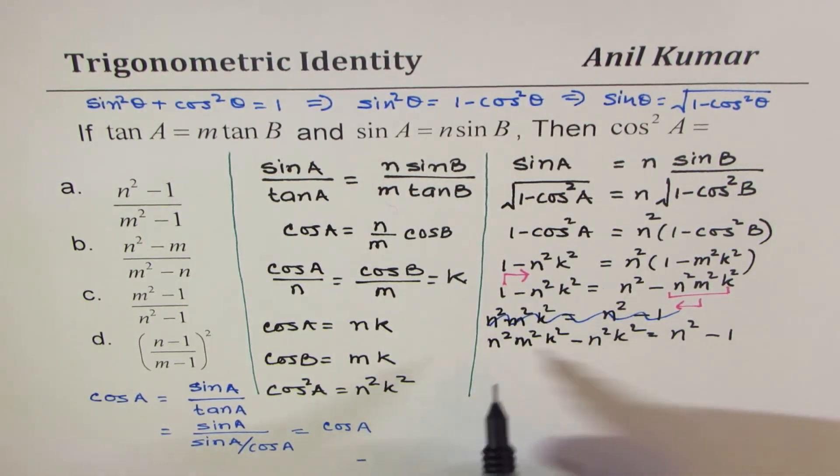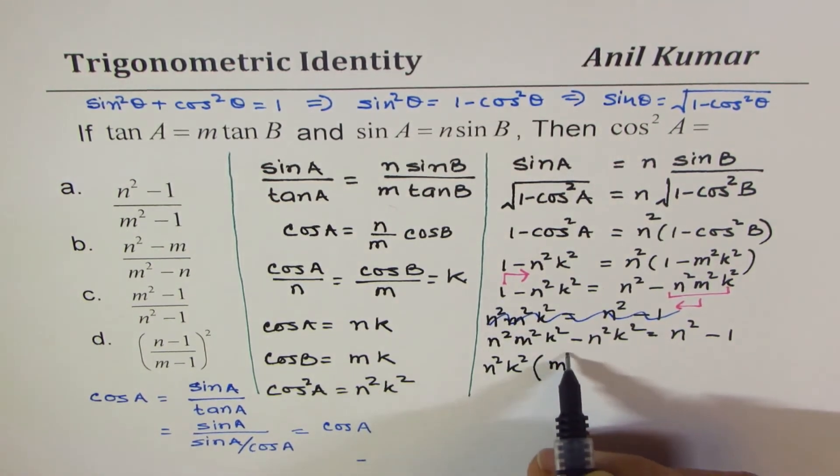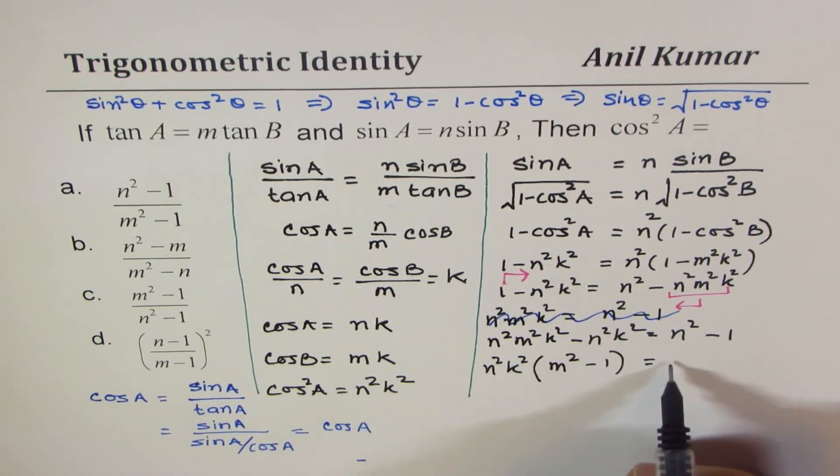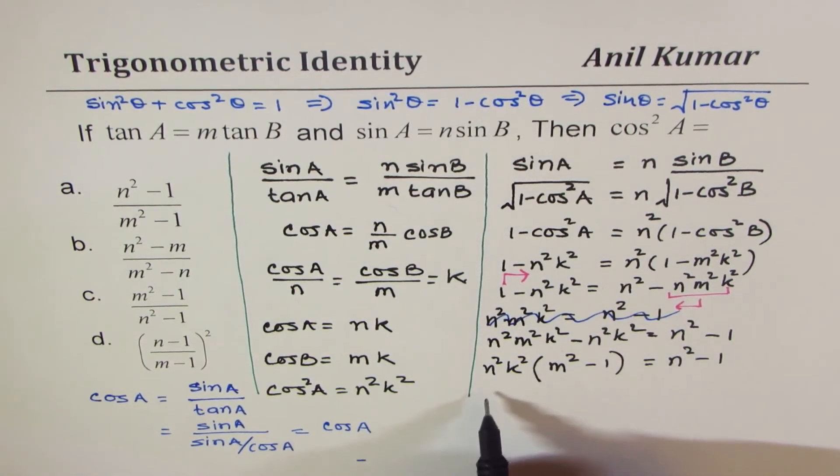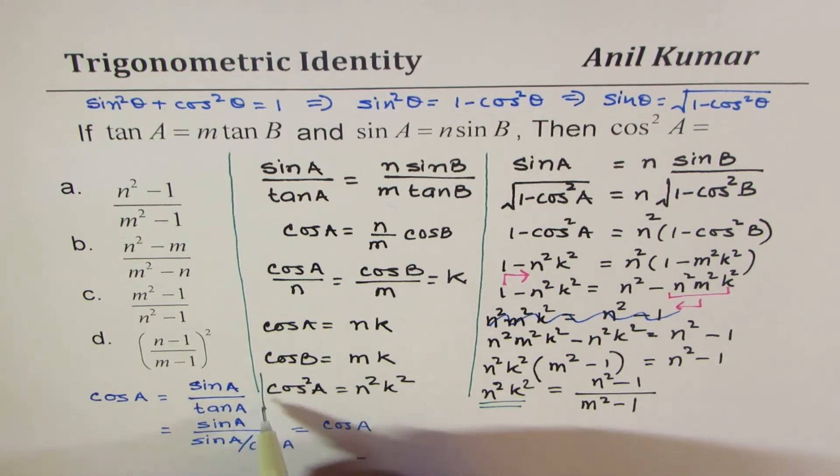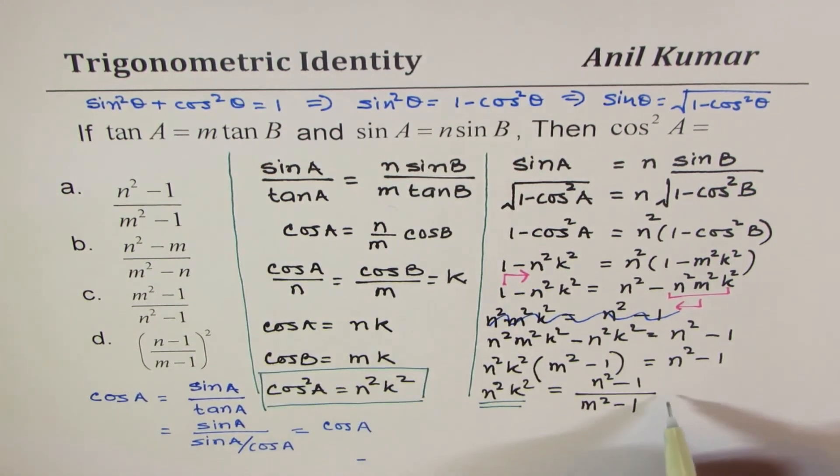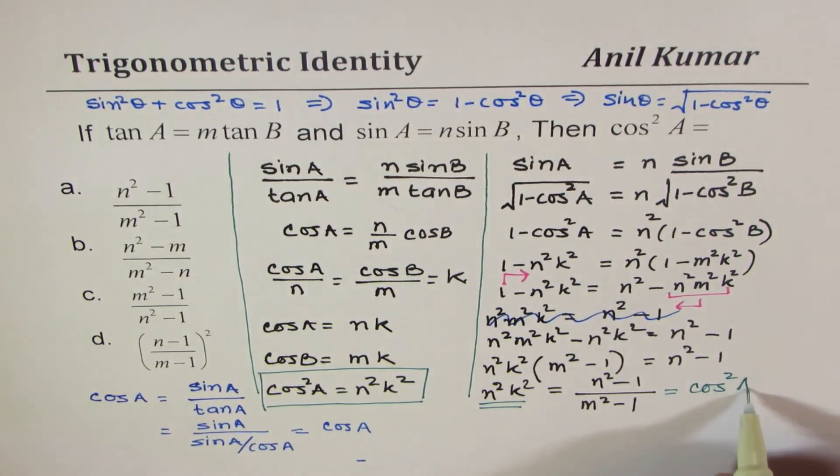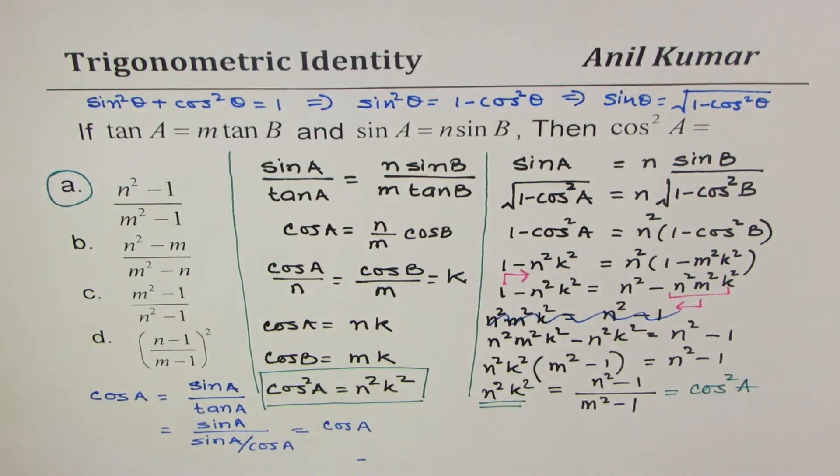We can factor out n square k square. So we have n square k square left with m square minus 1, which is n square minus 1. And from here, n square k square is equal to ratio of n square minus 1 over m square minus 1. Now, what is n square k square? Well, n square k square is cos square A. So this equals cos square A. So we get our answer, which is A. So A is the right answer.